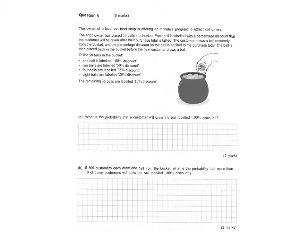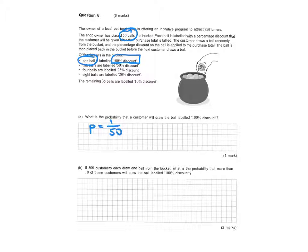The remaining 35 balls are labeled 10% discount. The customer draws a ball randomly and the displayed percentage is applied; the ball is then placed back before the next customer draws. Part (a): what is the probability a customer draws the ball labeled 100% discount? Total is 50 balls, one labeled 100%, so the probability is 1/50 = 0.02.